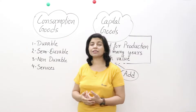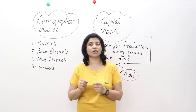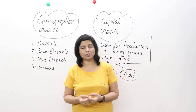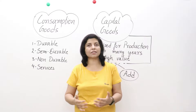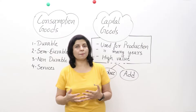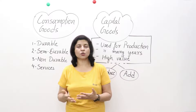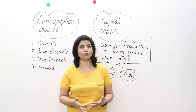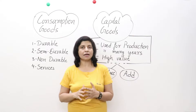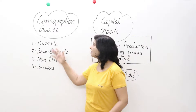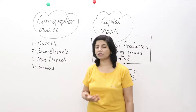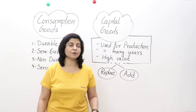Consumers use goods for satisfaction of their needs and wants. People like us purchase various items like toothpaste, brush, LPG, scooter, car, fridge, fruits, and vegetables to consume. All these goods come under the category of consumption goods, which satisfy our human wants. We will now discuss their types.